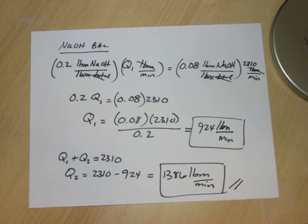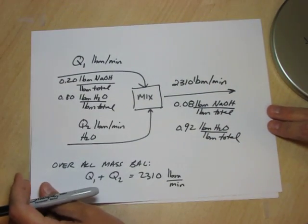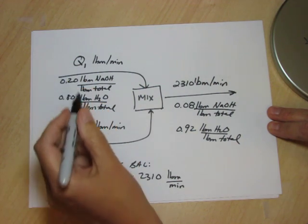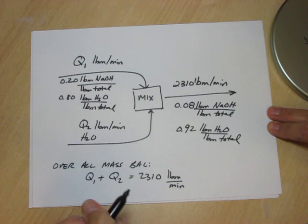Having done that we have all the information that we need for any other calculation we might want with this problem. We know Q1. We know Q2. If we wanted ratios we could calculate them.